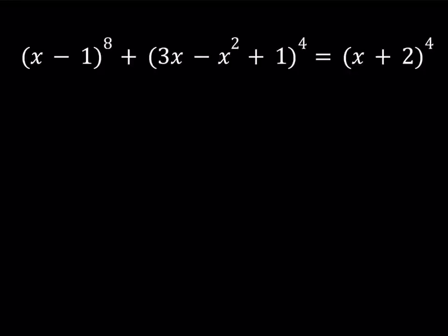Notice that we have the 4th power twice and then the 8th power. I want to make everything even, so let's turn the 8th power into a 4th power expression. I can write (x-1) to the 8th as (x-1)² to the 4th power, because 2 times 4 equals 8, and the rest stays the same.